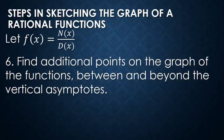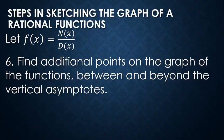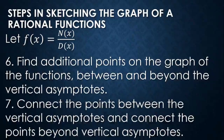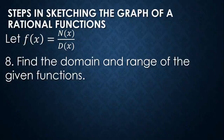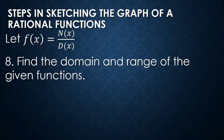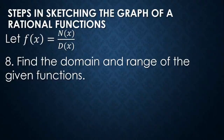Step six: find additional points on the graph between and beyond the vertical asymptotes. We assign values to x and solve for the corresponding y values, creating a table of ordered pairs. Then we connect the points between the vertical asymptotes and connect the points beyond the vertical asymptotes. Lastly, step seven involves determining the domain and range of the given function. Those are the eight steps in sketching the graph of a rational function. I'm going to give you three or four examples to work through.